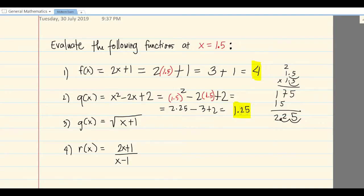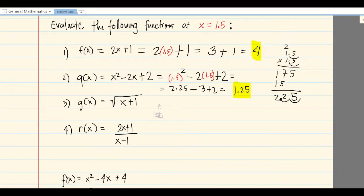Very easy. Number 3 is square root. When you see square root, don't panic. g(x) = √(x+1). Replace x with 1.5, so 1.5 plus 1 is 2.5. That's the answer.